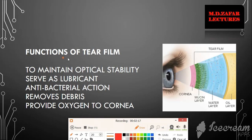The functions of the tear film include: maintaining optical stability, serving as a lubricant, having antibacterial action, removing debris, and providing oxygen to the eye.